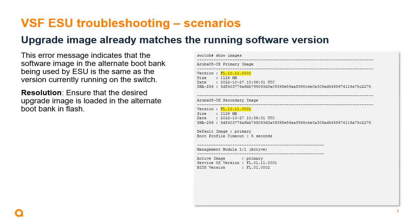The error 'upgrade image already matches the running software version' indicates the alternate boot bank has the same version currently running, typically occurring if ESU is initiated before the new software image has been loaded. Resolve this by copying the new software image to the alternate boot bank and allowing two to three minutes for the image to sync to the rest of the stack before attempting ESU again.